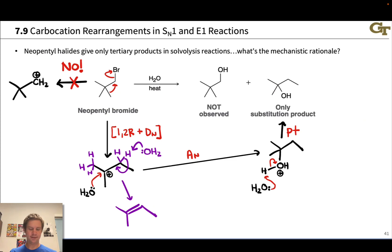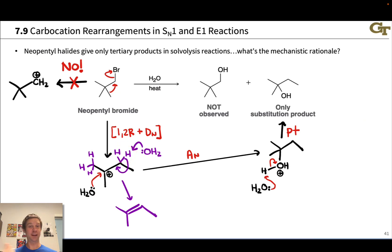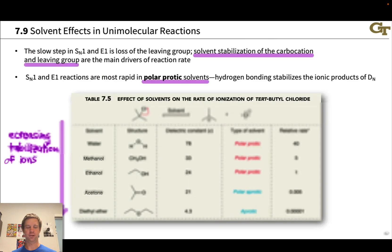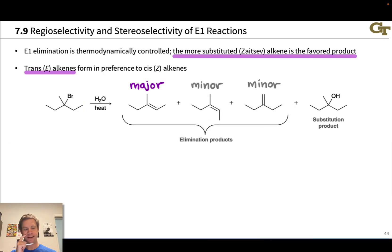Note that the more substituted alkene product, derived from deprotonating at the more substituted position, is drawn as the major product. This is because E1 elimination reactions are universally thermodynamically controlled, meaning the Zaitsev product is always the major product. This also means that trans-alkenes will be favored over cis-alkenes in E1 elimination reactions. The more substituted Zaitsev alkene is the major product, and trans-alkenes form in preference to cis-alkenes.